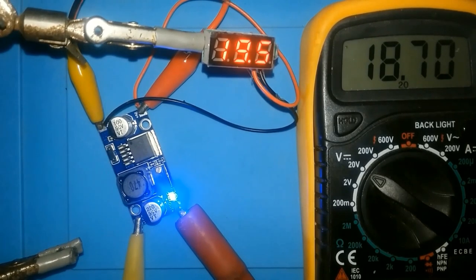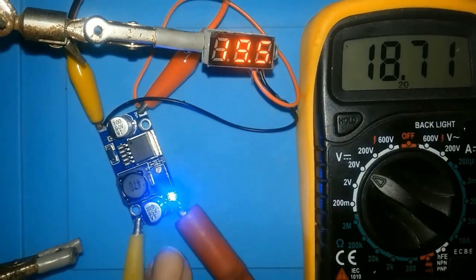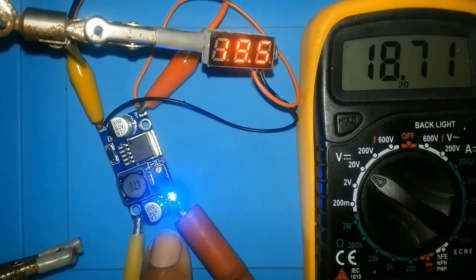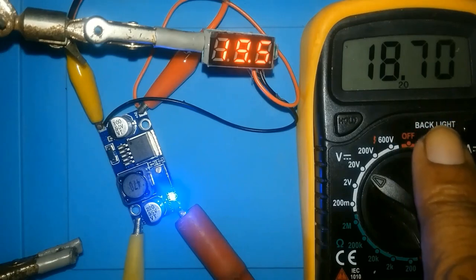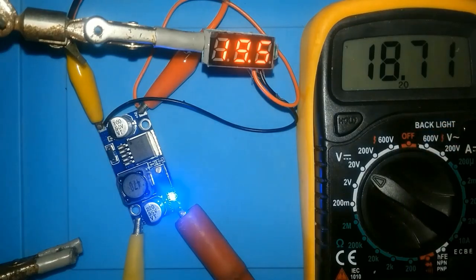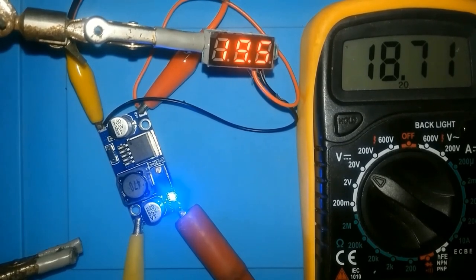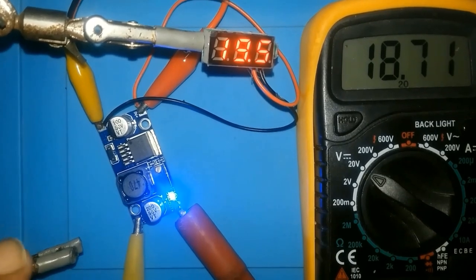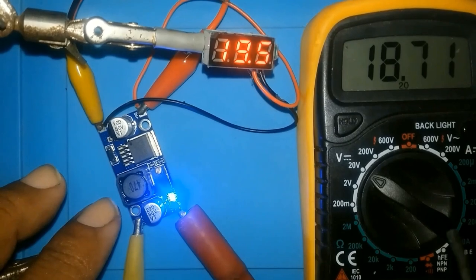As you can see, we have 19.5 volts here. The blue light is on. We have 18.7 on the other side. There is no way you would put 19 volts in one side and get 19 volts out the other side. This is a step-down transformer. So you would always lose something.